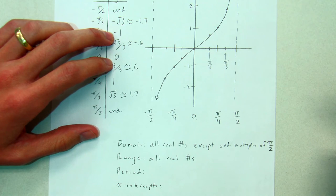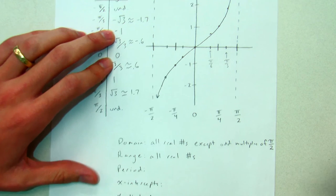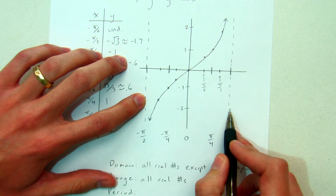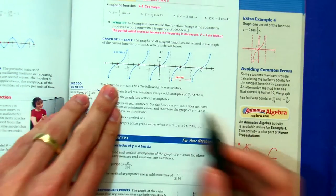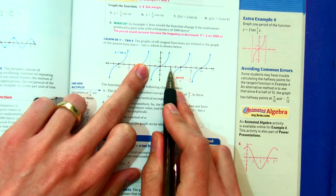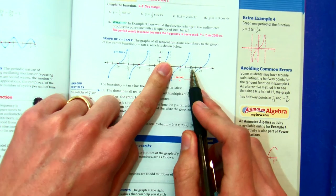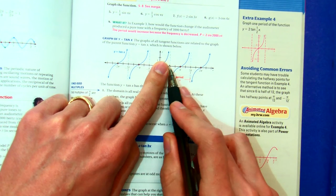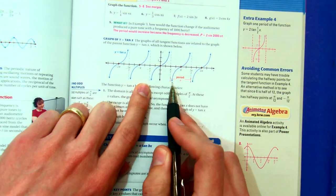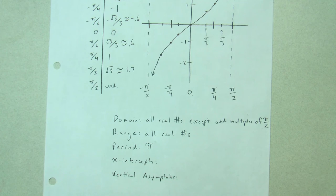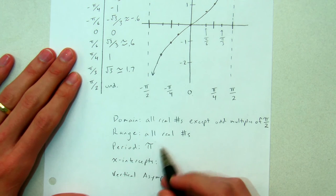The period is how far I have to go before the graph starts repeating itself. Let's look at the graph in the book where I can see multiple periods. Here's the period we graphed from negative pi over 2 to pi over 2. If I copy that period and paste it, I see the exact same thing. The distance from negative pi over 2 to pi over 2 — that distance, or period, is pi. Remember, the period for y equals sine x and y equals cosine x was 2 pi, so tangent is a little different.